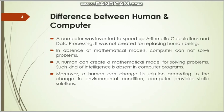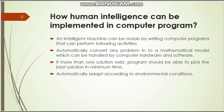A human can create any mathematical model to solve any problem, but a computer cannot. A computer requires a mathematical model to solve a problem. Without a mathematical model, the computer cannot solve any problem. So how can human intelligence be implemented in a computer program? Intelligent machines can be built using some programming language, but the logic is created by the human being. The program created by the human is run in the machine so that the computer can be a little bit more smart.